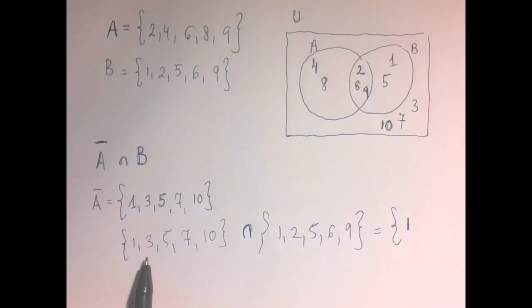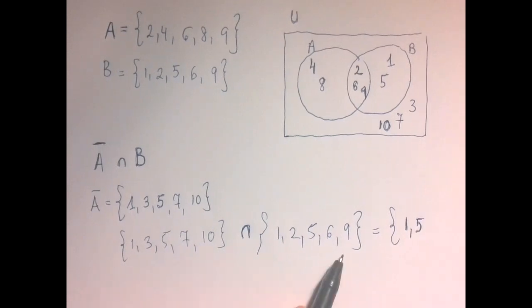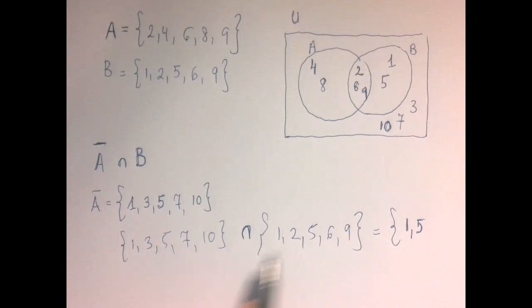The intersection is a set of all elements in both sets. So 1 is in this intersection, not 2, not 3, 5 is in both, 6 is not in the first one, 7 is not in the second one, 8 is in neither, 9, that's it.